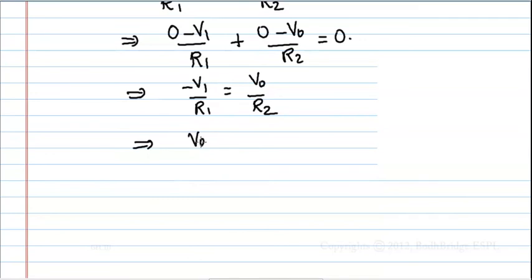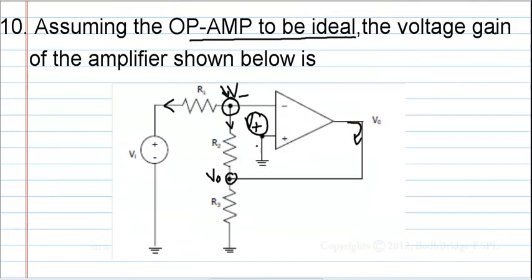This implies V naught by V1 is minus R2 by R1, and hence we got the final answer which is to be found